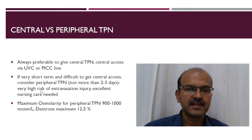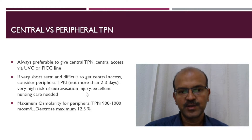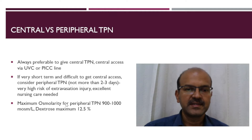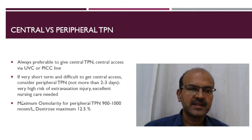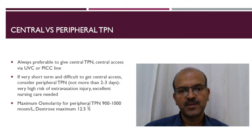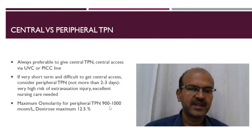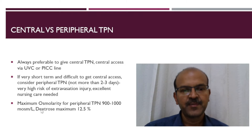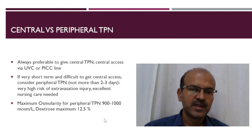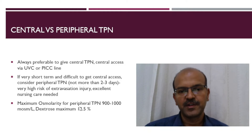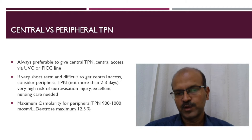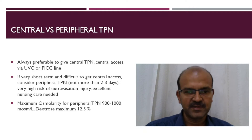The main risk of peripheral TPN is the high risk of extravasation injury, and excellent nursing care in monitoring the IV line is needed. The maximum osmolarity for peripheral TPN is 900 to 1000 milliosmoles per litre, and the maximum dextrose concentration is 12.5 percent. This limits the nutrients we can add, but we can manage with peripheral TPN for 2 to 3 days if essential.